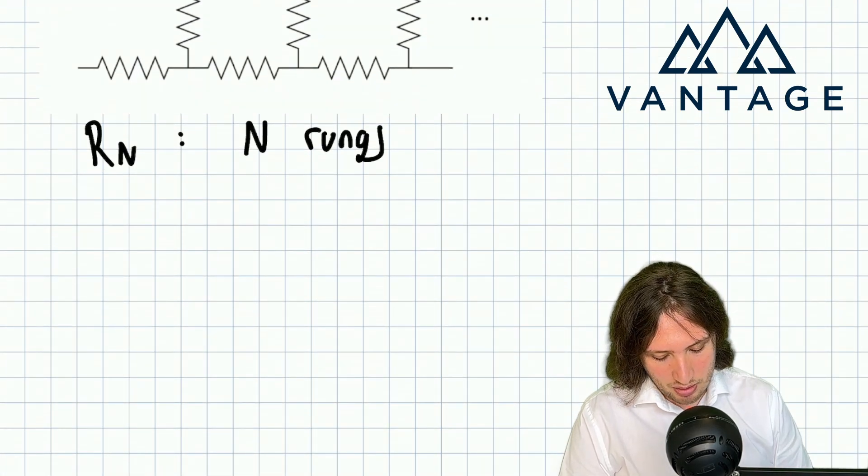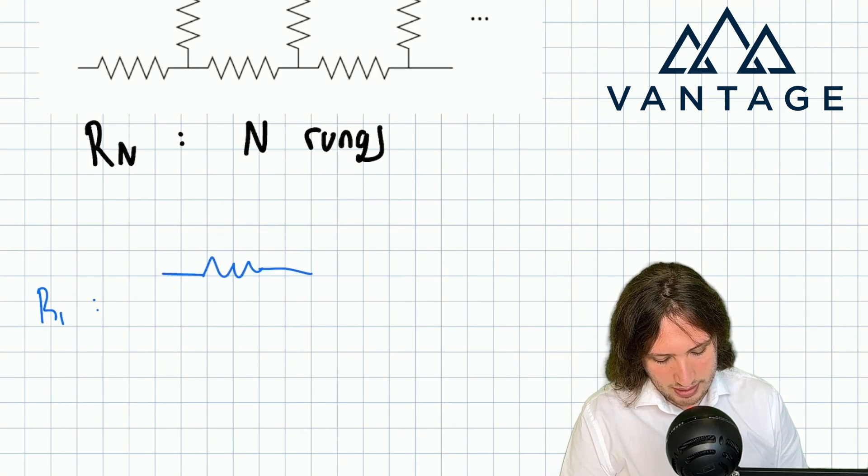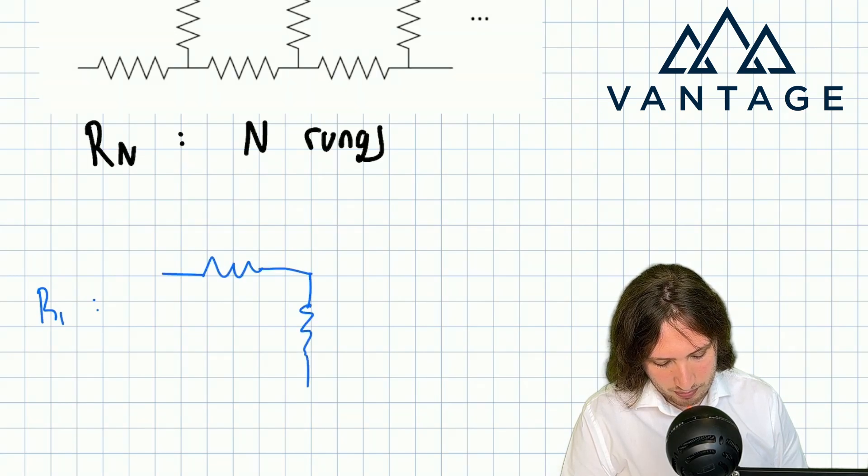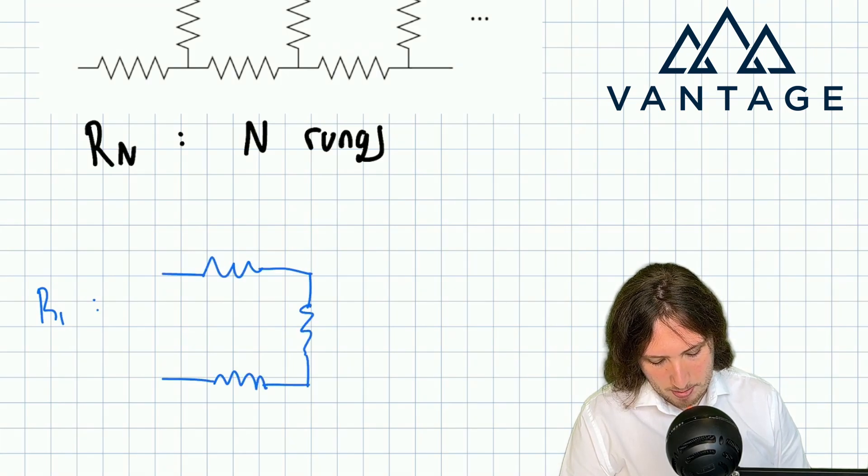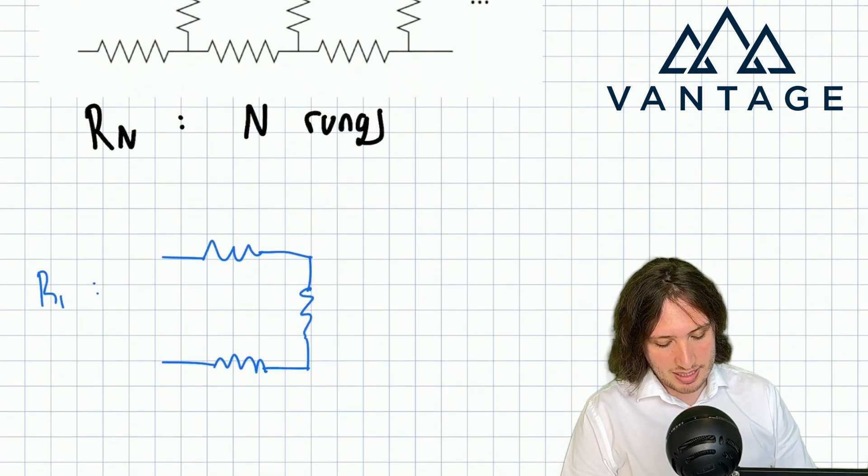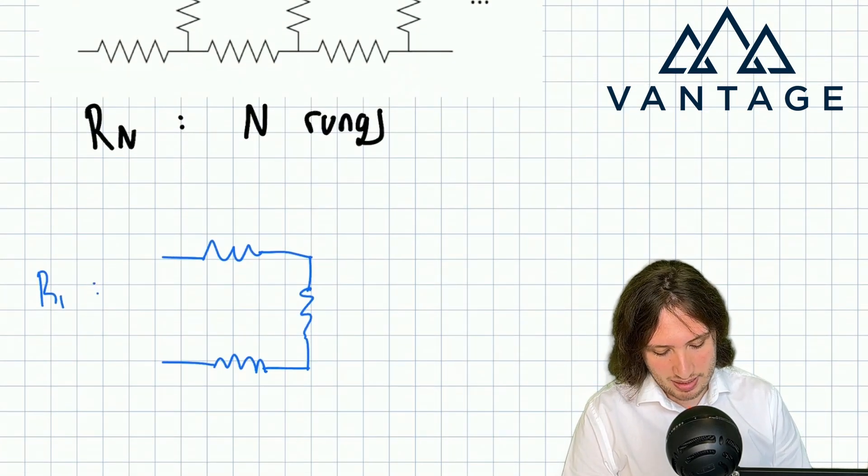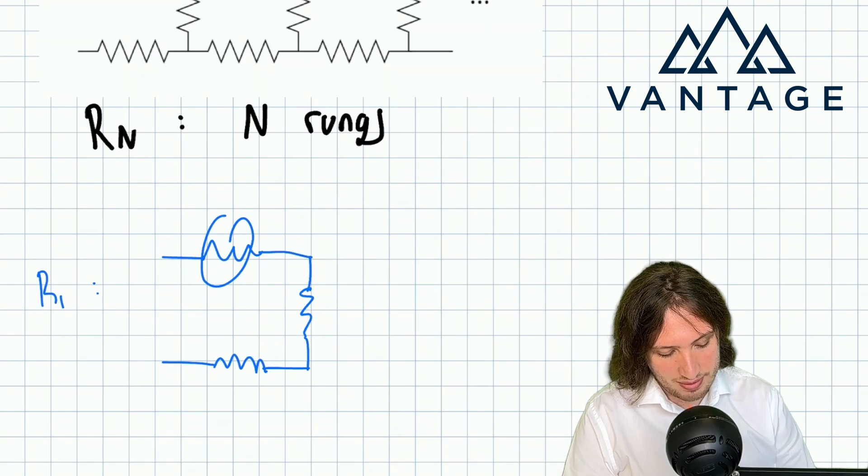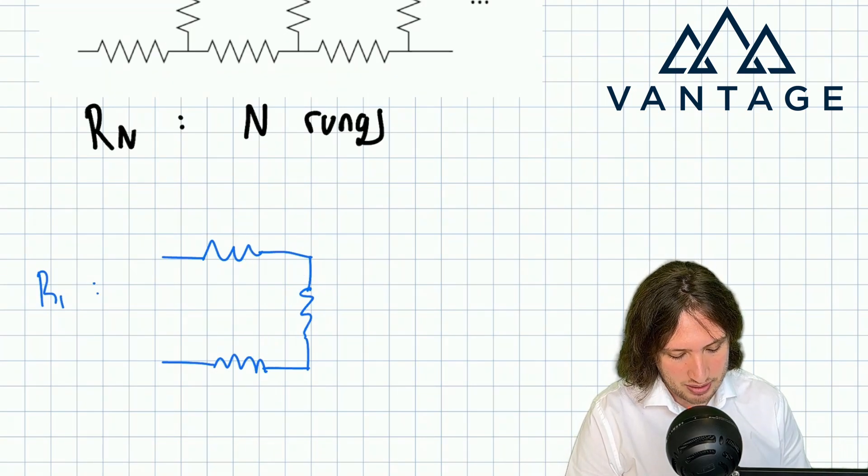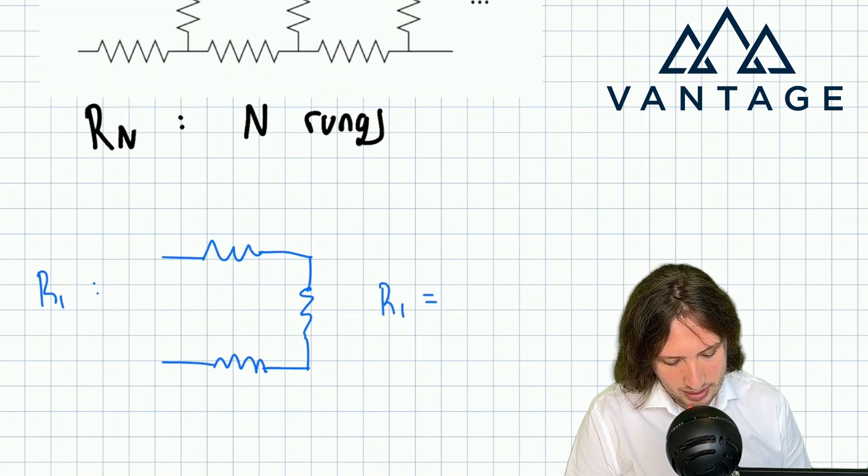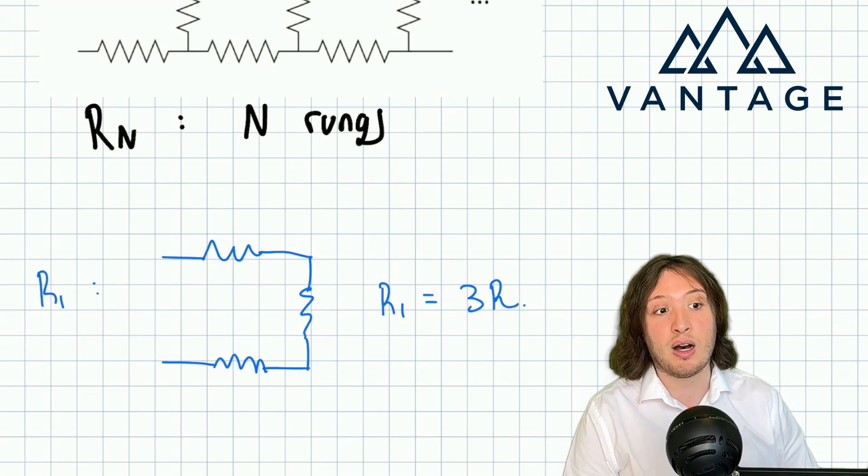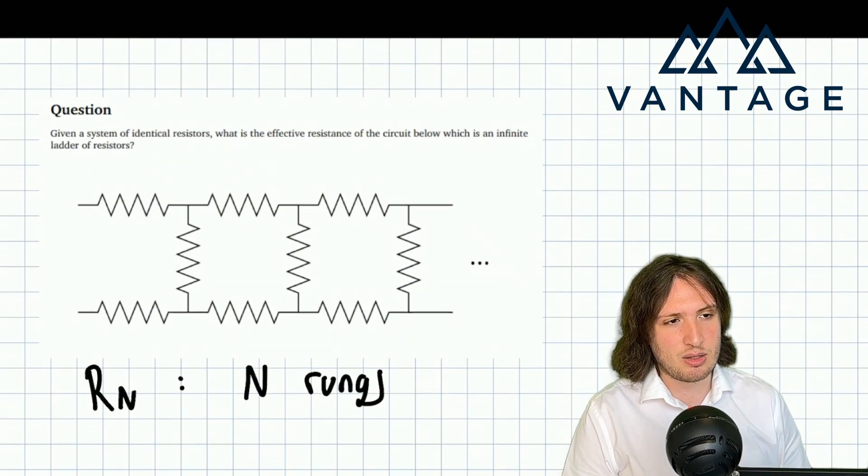So for R1 I've got this setup, so just a single rung. That's extremely simple because this is just a series circuit. These three resistors are all in series, there's no branching, no junctions, so R1 is just going to be 3R where R is the resistance of each individual resistor.